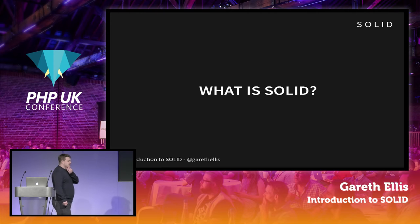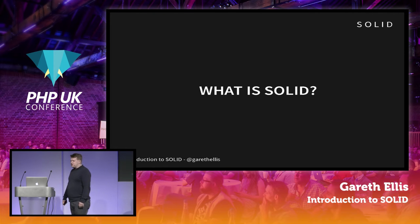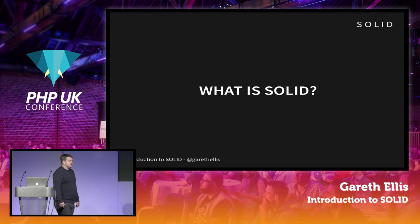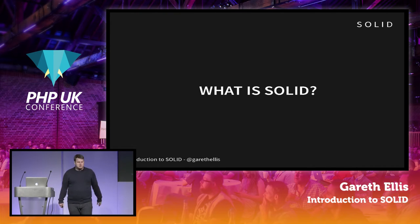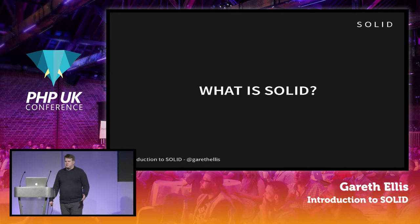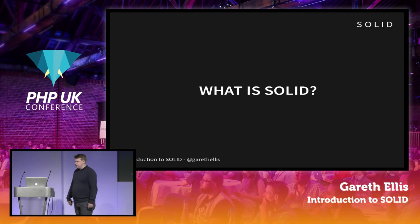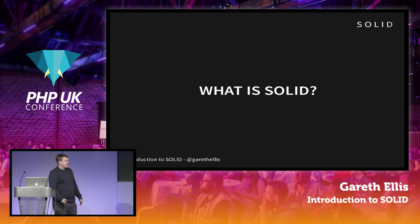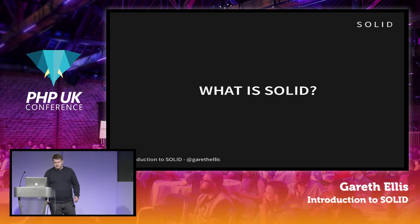The SOLID principles are five guidelines for object-oriented design. They were first formulated in the late 90s under the name 'The First Five Principles' by a developer called Robert Martin, who some of you may know as Uncle Bob. In the early 2000s, another developer called Michael Feathers came up with the acronym SOLID that we use today to describe these principles together.